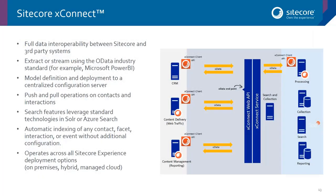First, let's look at what XConnect is, because it's important to get the terminology right. XConnect is not a server role — it's a service layer that sits between XDB and any client that wants to read, write, or search experience data using the XConnect client API. All XConnect APIs are based on OData, and there are currently two service endpoints: collection and search.